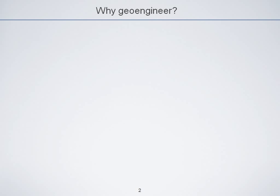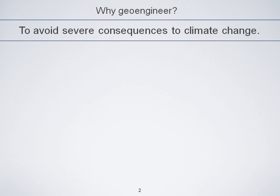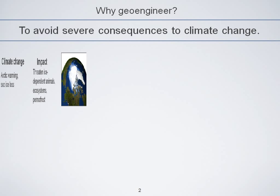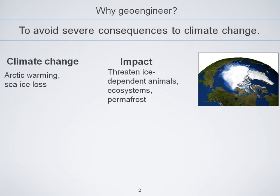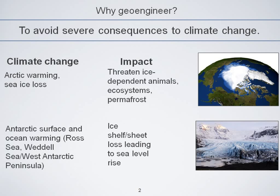So why would we geoengineer? To first order, the purpose of geoengineering is to cancel global mean temperature rise that would occur under increased anthropogenic greenhouse gases. But in reality, we would really want to geoengineer to avoid severe consequences to this temperature rise. If there were no severe consequences, we may not be talking about global warming so much. Some of the severe consequences I'm going to talk about are Arctic warming and sea ice loss, which is threatening to ice-dependent animals and ecosystems, and permafrost melt.